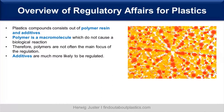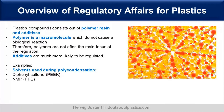Let's have a look at regulatory affairs for plastics. Plastic compounds consist of polymer resin and additives. The polymer, by definition, is a macromolecule which cannot cause a biological reaction because it is so large. Therefore, polymers are not often the main focus of regulations — it's more the additives, which have a much higher chance of being released out of the polymer matrix and entering the body or harming the environment.